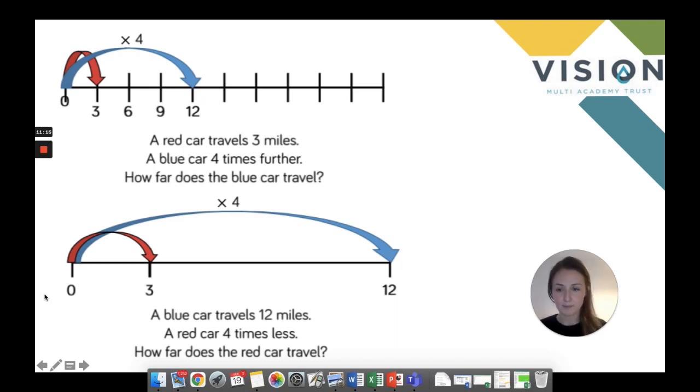Here we have a number line and it is more of a word problem, so a slightly more advanced problem. It's saying that the red car travels three miles and the blue car travels four times further. So how far does the blue car travel? So it's quite similar to that boys and girls idea that we saw before. And it's using the comparison. So two different ideas on the same number line can be a really powerful way to show the children the difference. This is exactly the same underneath here. But instead of having all of the markers on the number line, it just has the key parts here, so the three and the twelve.